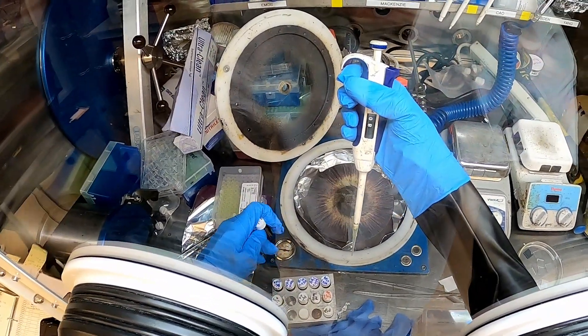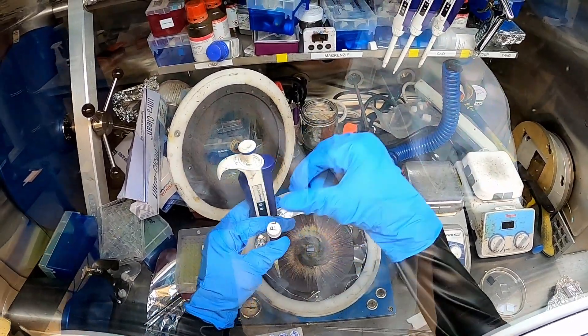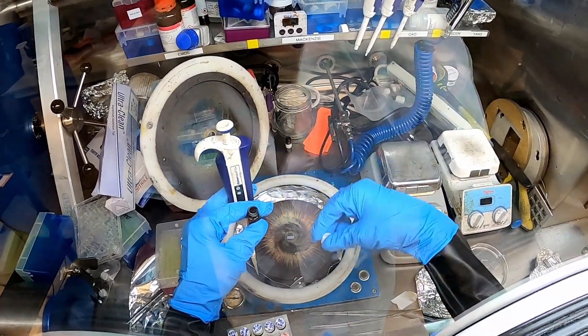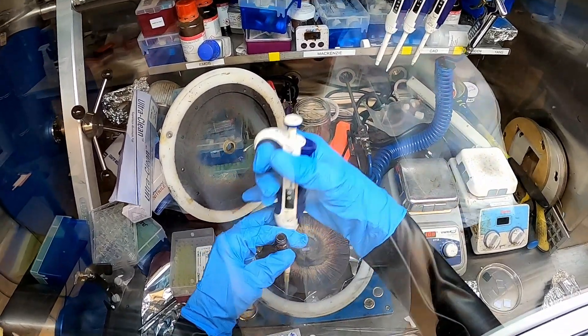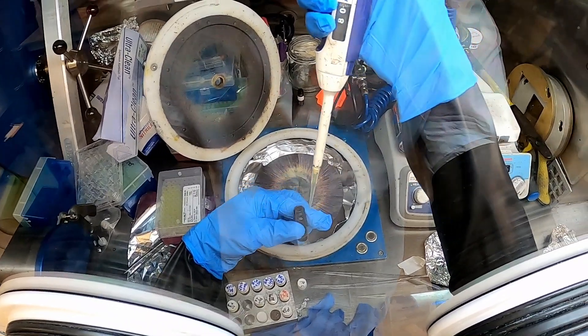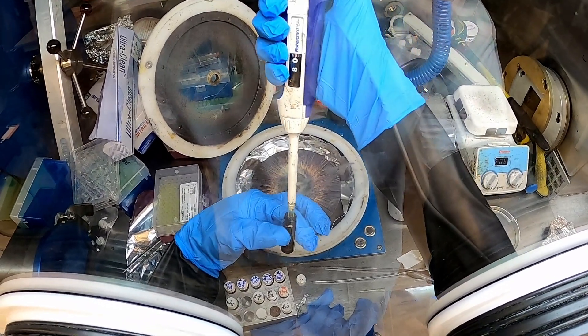Then we'll withdraw yellow perovskite precursor solution from a glass vial and deposit the solution carefully onto the substrate, ensuring to cover the entire substrate with solution.